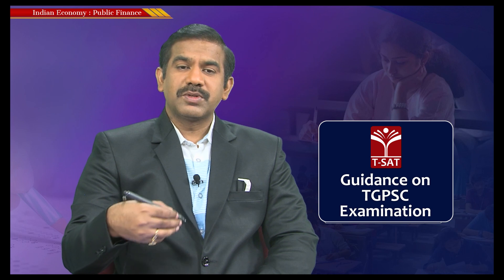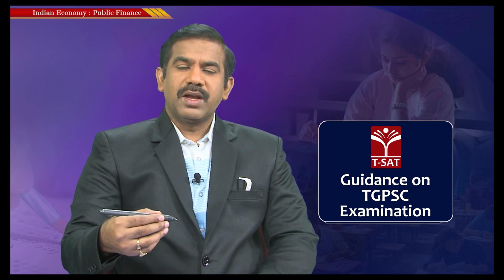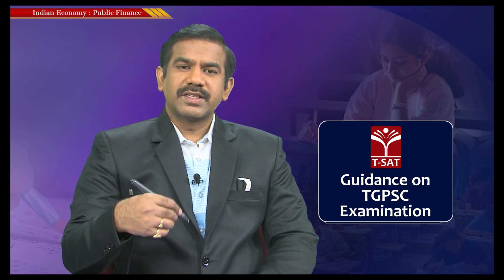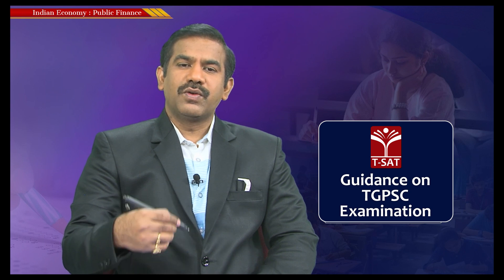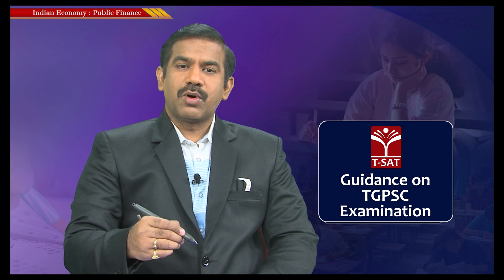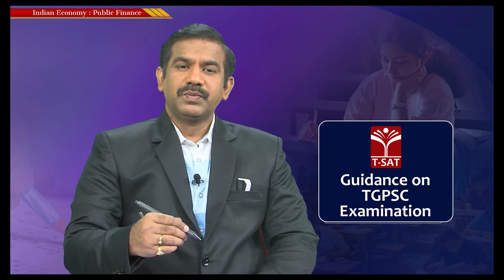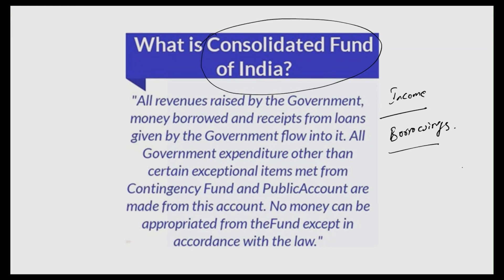The government is answerable to the public, since the ones who sit in Parliament are the representatives of the people. That is the very basic purpose of submitting the budget to Parliament. The money the government raises through taxes and various other means, and the money it borrows to meet excess expenditure, all flows into the Consolidated Fund of India. Without approval from Parliament, the government has no right to spend a single penny from this fund.